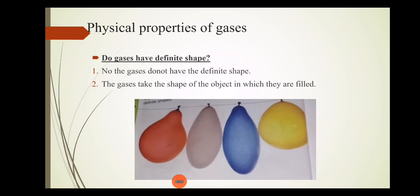Point number three: do gases have a definite shape? Gases cannot maintain a definite shape. In the diagram you can see balloons of different shapes — a circular balloon and an oval balloon. The gases take the shape of whatever object they are filled in. So gases do not have a definite shape; they take the shape of their container.